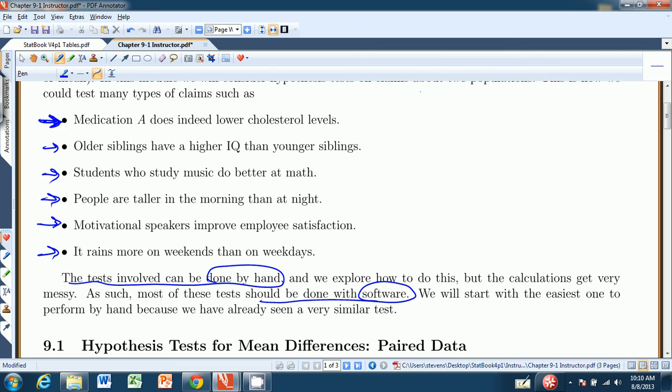But we'll start with the easiest one because that one's easy, we'll start with the easiest one to do by hand because you've actually seen basically that same test. But then as we get into the next two after that, independent means and proportions, the calculations get a little messy.